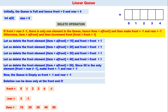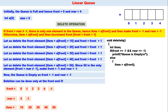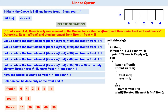Deletion can only be done at the front end. The delete function: if front equals minus one and rear equals minus one, the queue is empty and deletion cannot be done. Otherwise, take the front element to item. If front equals rear, make front and rear equal to minus one. Otherwise, increment front and print the deleted element.